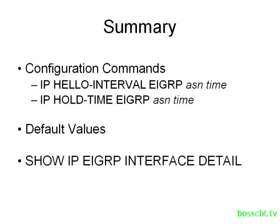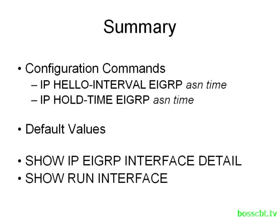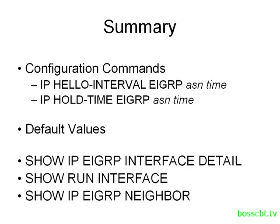To verify our work, we can check out the show IP EIGRP interface detail command to learn the hello interval. We can check out the running configuration to see if we're using values that are different than the defaults. And to get a rough idea of the hold timer, we can issue the show IP EIGRP neighbor command, which tells you how much time has passed since we last received a hello from the neighbor. That is how you configure the EIGRP hello and hold timer values. Thanks for watching.